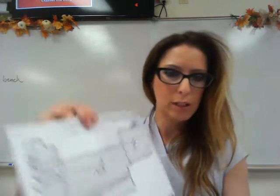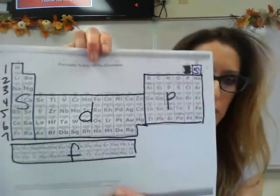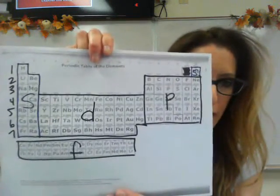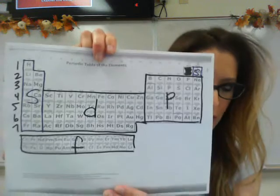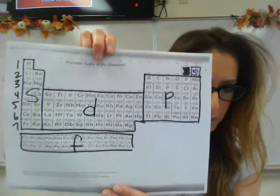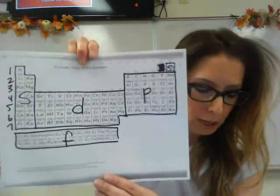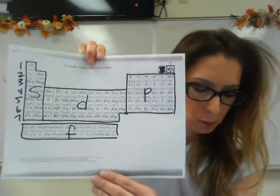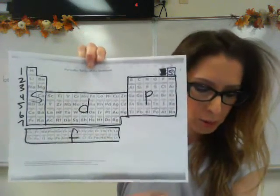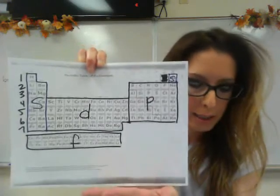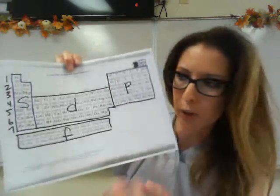Let's talk about blocks of elements. In the last chapter I taught you where the S, P, D, and F blocks were, and the periods numbered 1 through 7. We want to follow this when we're labeling the highest energy sublevels.